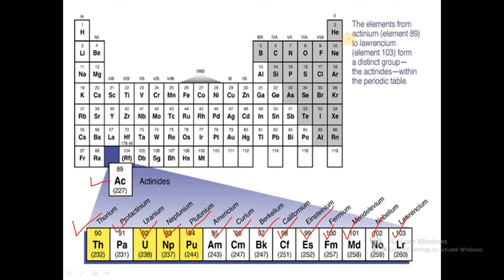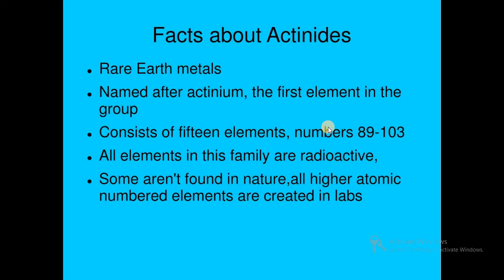The elements from actinium, element 89, and last lawrencium, element 103, form a distinct group, the actinides, within the periodic table. So what are the facts about actinides? Actinides are rare earth elements. They are named after actinium, the first element in the group. It consists of 15 elements.